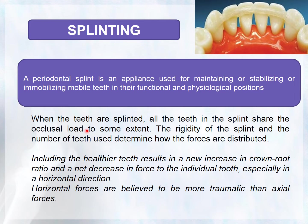When teeth are splinted, all teeth in the splint share the occlusal load to some extent. The rigidity of the splint and the number of teeth used determine how forces are distributed. Including healthier teeth increases the crown-root ratio and produces a net decrease in force to individual teeth, especially in the coronal direction, since horizontal forces are believed to be more traumatic than axial forces.